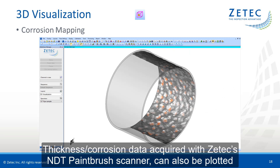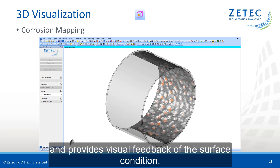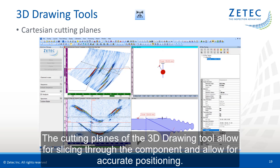Thickness corrosion data acquired with the CTEX MDT paintbrush scanner can also be plotted and provides visual feedback of the surface condition. Cutting planes of the 3D drawing tool allow for slicing through the component and allow for accurate positioning.